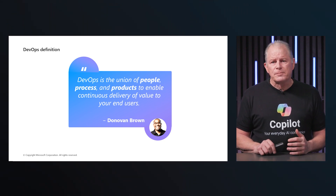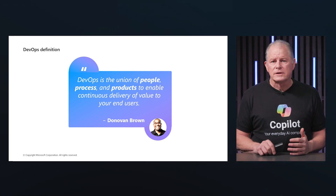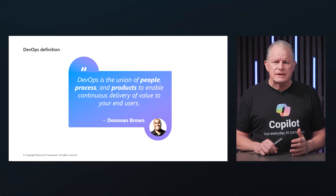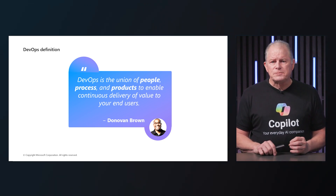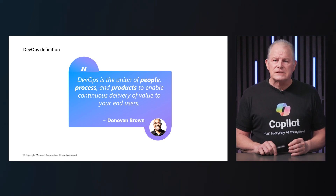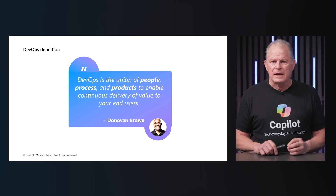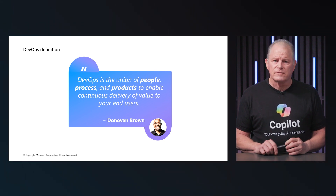The process component refers to the methodologies and practices that guide how work is done. This includes adopting agile practices, continued integration, continued delivery, and continued development. These processes ensure that software is developed, tested, and released in small manageable increments allowing for rapid feedback and iteration. This iterative approach helps teams to deliver value more continuously and respond to changes required more effectively.